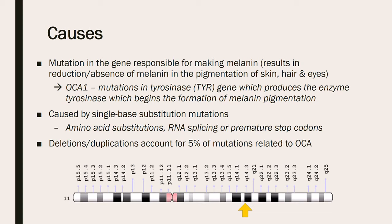A nonfunctioning tyrosinase enzyme means that no melanin is formed, which results in the lack of pigmentation in the hair, skin, and eyes. The mutation is generally a single-base substitution mutation in which there could be either an amino acid substitution, RNA splicing, or a premature stop codon. Approximately 5% of the mutations related to albinism are due to deletions or duplications, while the other 95% is due to these single-base substitutions.